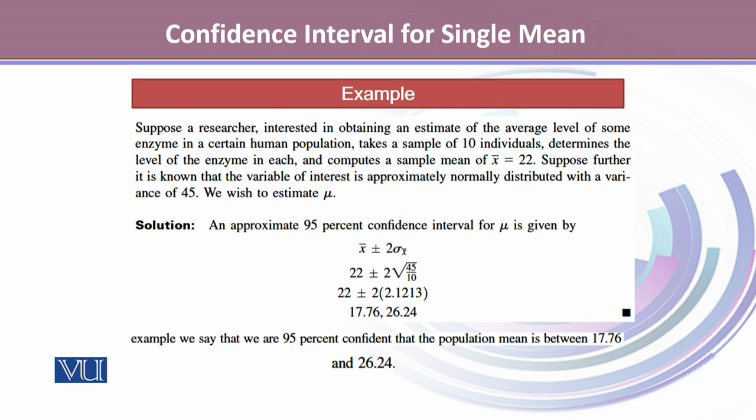Let's take an example. A researcher wants to estimate the average enzyme level in a human population. He takes a sample of 10 individuals, determines their enzyme levels, and computes a sample mean X̄ = 22.